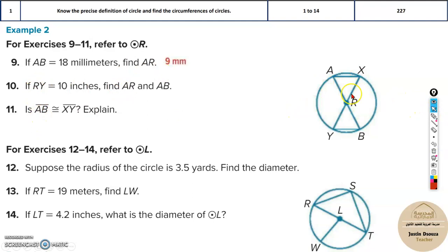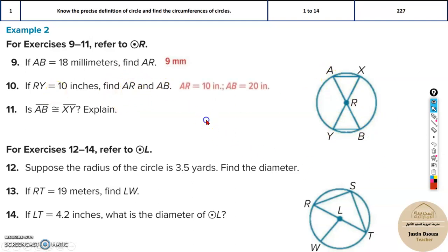Similarly, RY is 10. They are asking us to find AR and AB. AR is a radius and RY is a radius, so they are equal — that is 10. But AB would be 20. So AR is 10 and AB, the diameter, is 20.